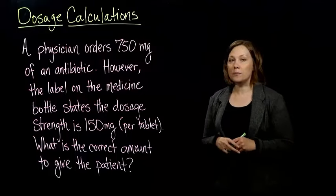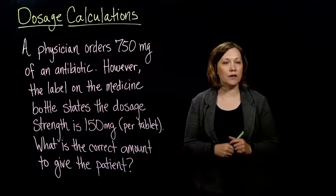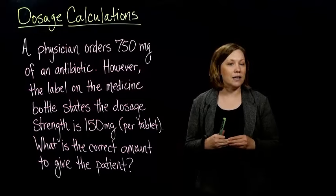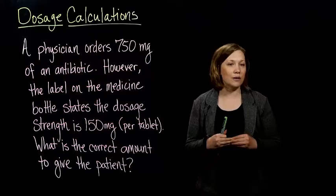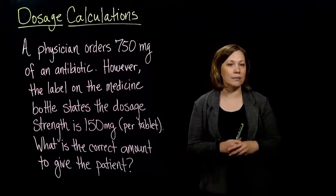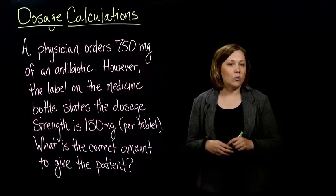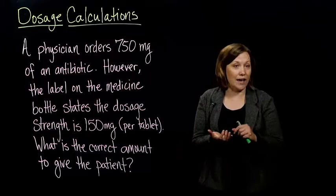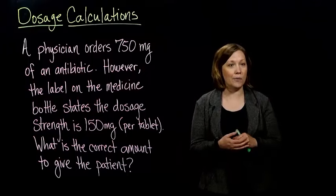Alright, so I've got an example here. A physician orders 750 milligrams of an antibiotic, and the label on the medicine bottle states the dosage strength is 150 milligrams per tablet. So in each tablet, there's 150 milligrams. What we need to figure out is what is the correct amount to give the patient. We're going to give the patient some tablets of antibiotic, and we need to know how many we're going to give.